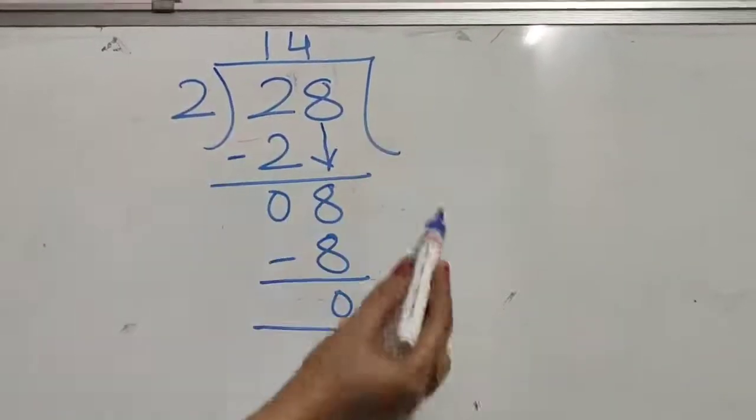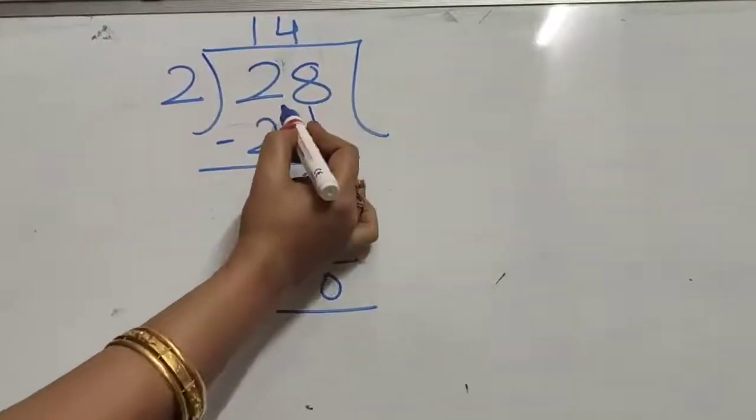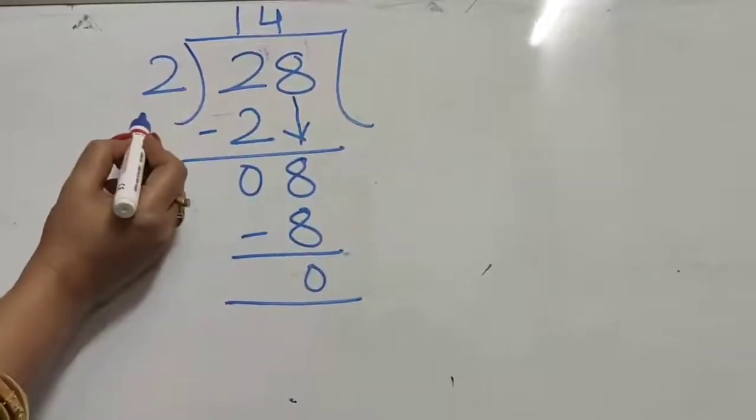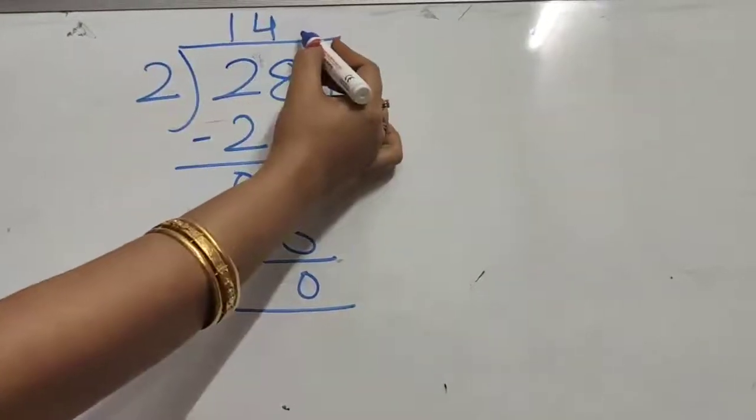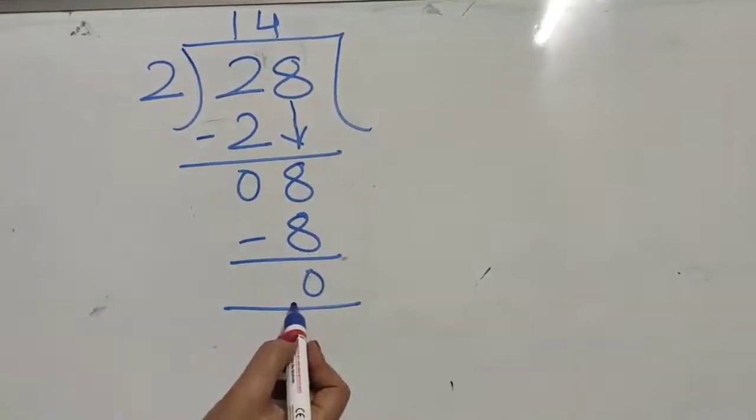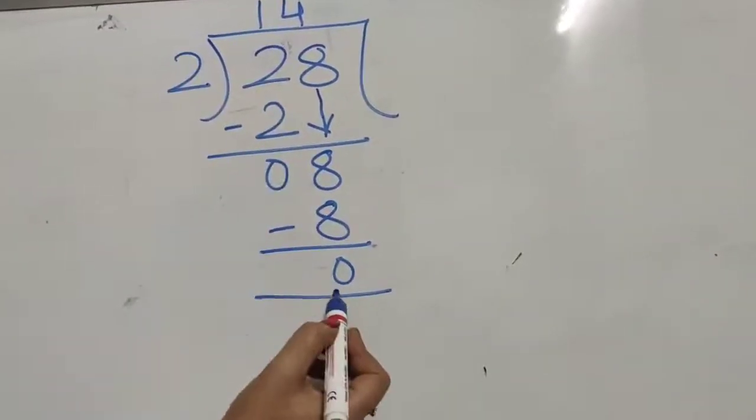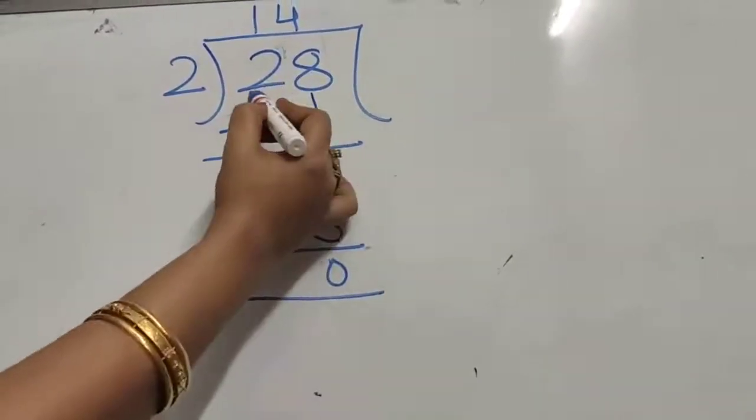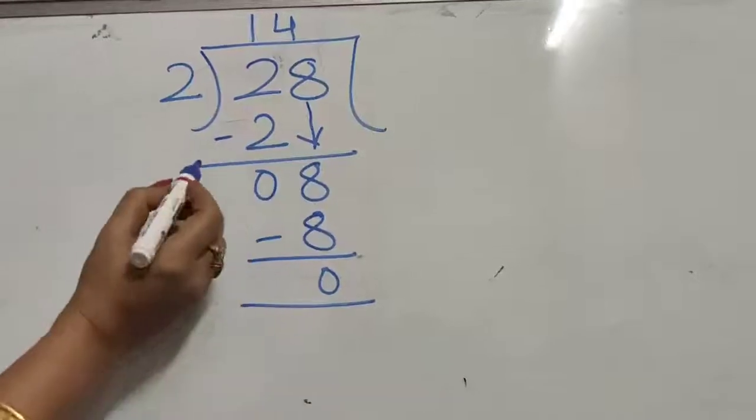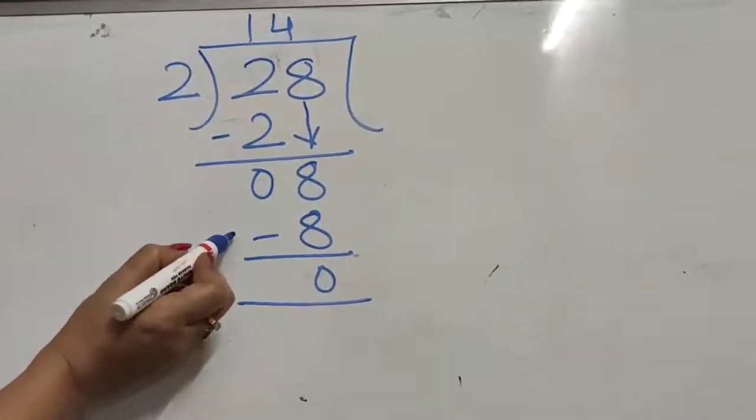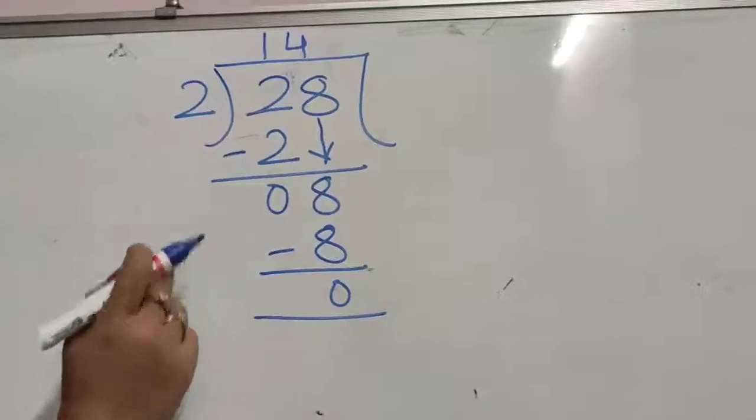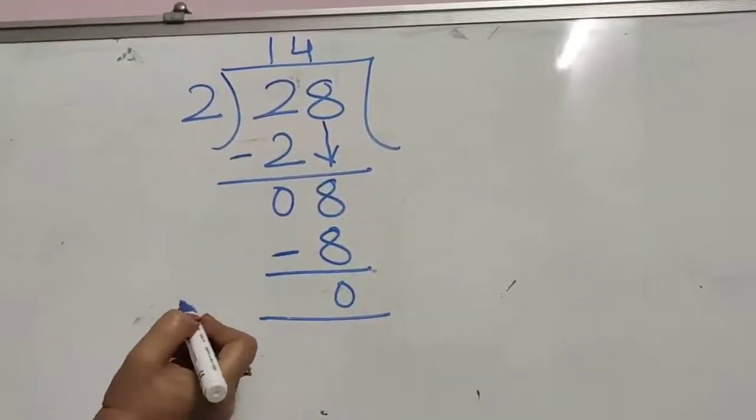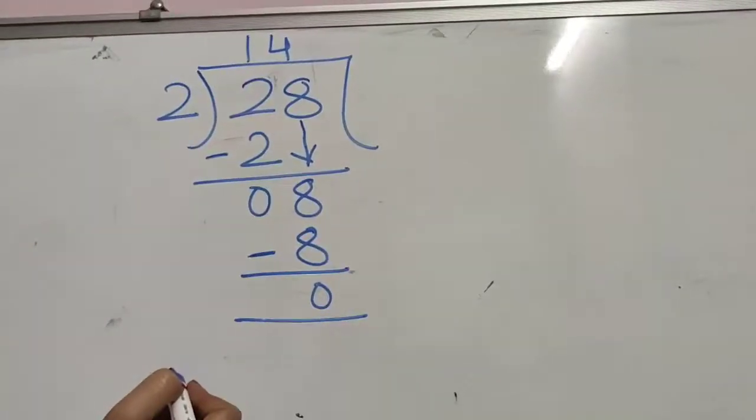Now if we focus on this sum, where 28 is the dividend and 2 is the divisor and 14 is our quotient and 0 is the remainder. To get this remainder or to solve this dividend, we kept on subtracting. Here we subtracted whatever the value came, here also we subtracted till nothing is remaining.